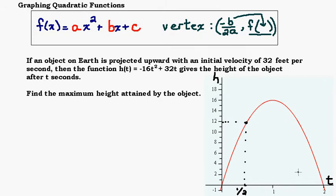We can actually get the answer or estimate the answer to our question from looking at this graph. The question is find the maximum height attained by the object. Well, the maximum height is going to be right here, whatever this height is. And we can see that this is the vertex.